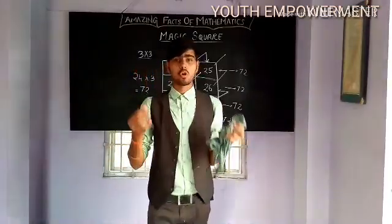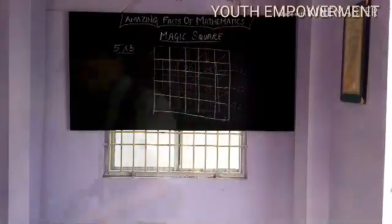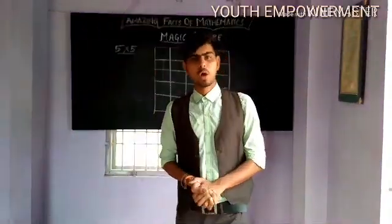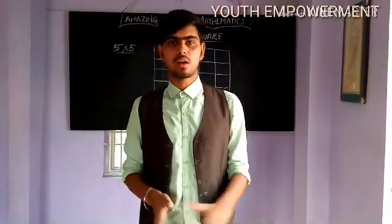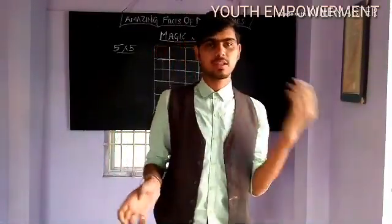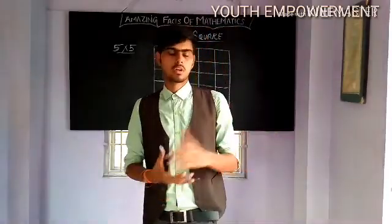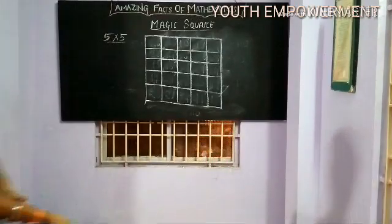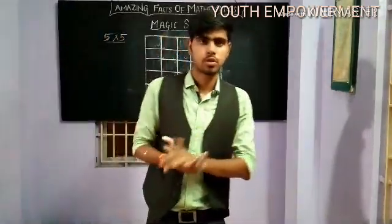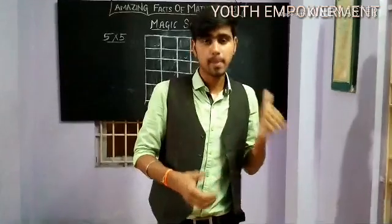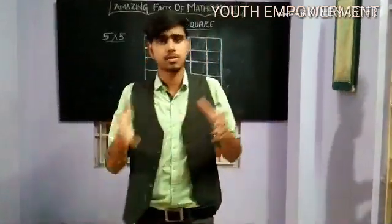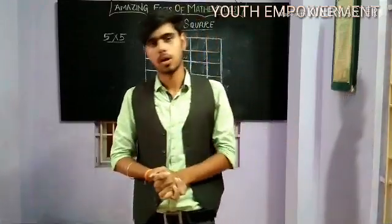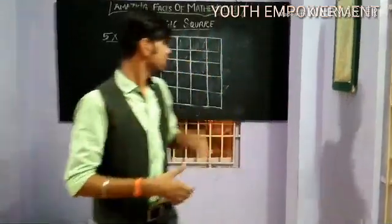This is the 3x3 magic square. My dear friends, now let us see the 5x5 magic square. It is pretty much more interesting than the 3x3. The method of solving the 5x5 magic square is the same as the method used for the 3x3 magic square. Let's solve it.